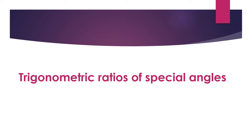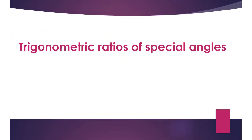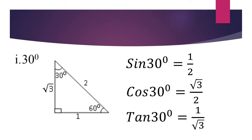We'll also consider trigonometric ratios of special angles. The first special angle is 30 degrees. We'll consider a right-angled triangle in which one of the angles is 60 degrees and the other angle is 30 degrees. One of the shorter sides is 1 unit, the hypotenuse is 2 units, and by Pythagoras' theorem we can get the other shorter side as root 3.